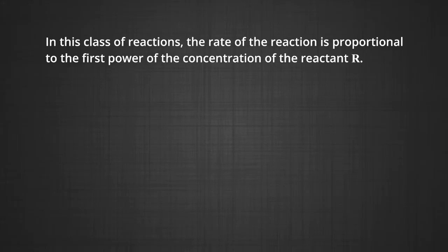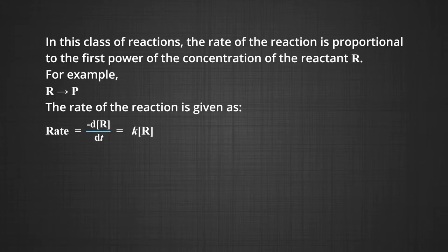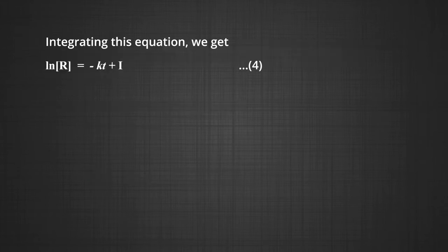For first order reactions: the rate of the reaction is proportional to the first power of the concentration of reactant R. For the reaction R → P, the rate is: −d[R]/dt = K[R]¹. Therefore, −dR/R = K·dt. Integrating: ln[R] = −Kt + I, where I is the constant of integration.